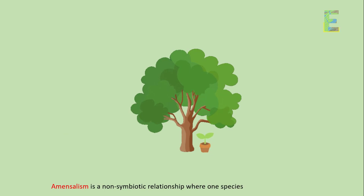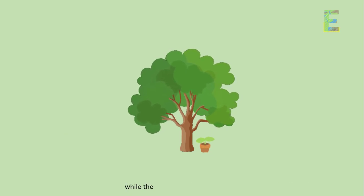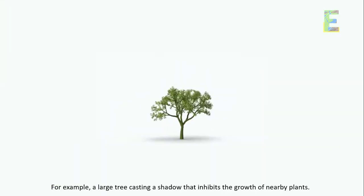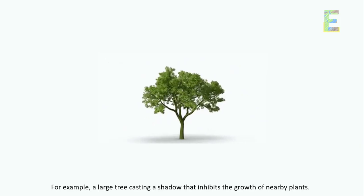Amensalism. Amensalism is a non-symbiotic relationship where one species is negatively affected while the other remains unaffected. For example, a large tree casting a shadow that inhibits the growth of nearby plants.